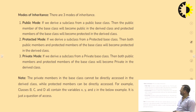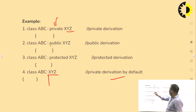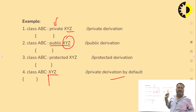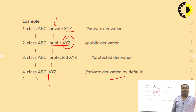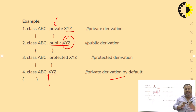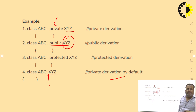In public mode: if we derive a subclass from a public base class, then the public members of the base class will become public in the derived class, and the protected members of the base class will become protected in the derived class. Private members of any base class are not going to become members of the derived class — only public or protected data or functions of the base class can be inherited.